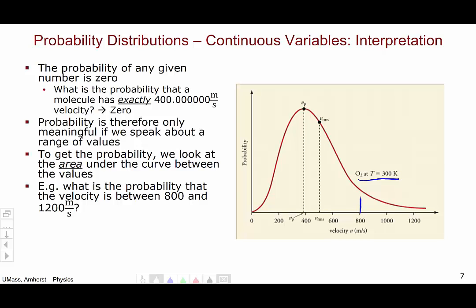The area we are interested in is the area between 800 and 1200. So this area here tells us the probability that a given oxygen molecule has a speed within this range.